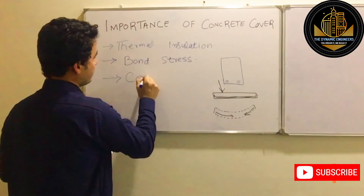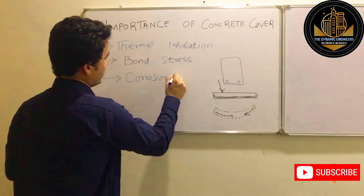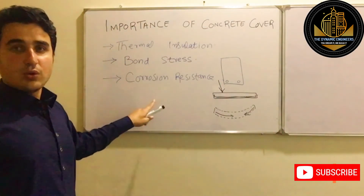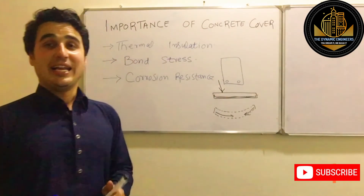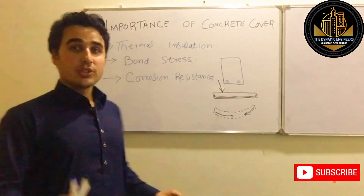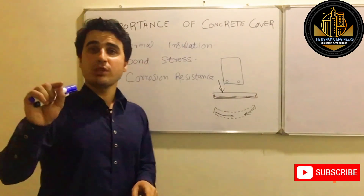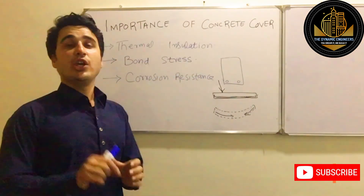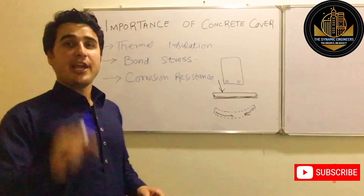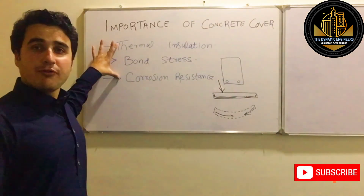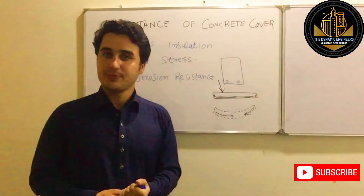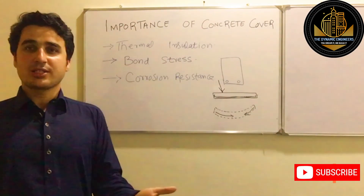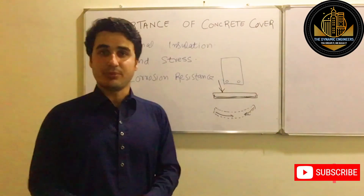The third important aspect is corrosion resistance. Most of you would have heard of this, and in the field people mostly talk about corrosion resistance. However, keep in mind that corrosion resistance is not more important than bond stress. You need to provide enough concrete cover so that none of these phenomena — thermal effects, bond failure, or corrosion — affect your concrete member. I hope you understood this; you can ask any questions in the comment section below. Thank you.